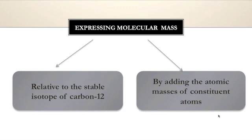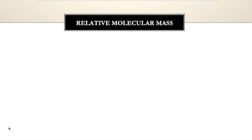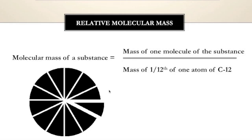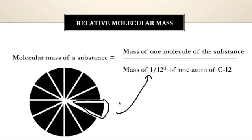Relative molecular mass is defined as: the molecular mass of a substance is equal to the mass of one molecule of the substance divided by the mass of one-twelfth of one atom of C-12. Suppose this is a carbon atom — I have divided this carbon atom into 12 parts and taken out one small part. The mass of that small part is one-twelfth of one atom of C-12, and we divide by this small mass.